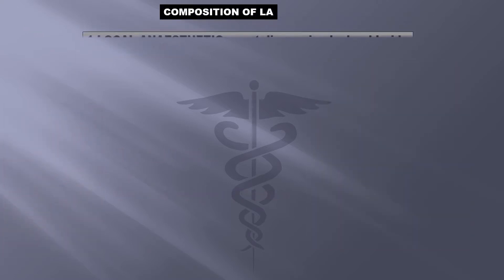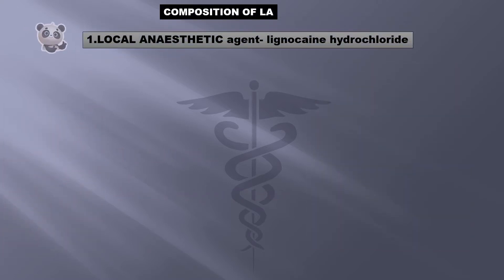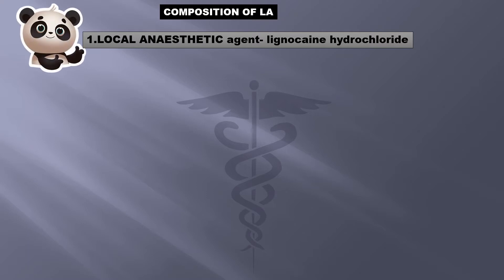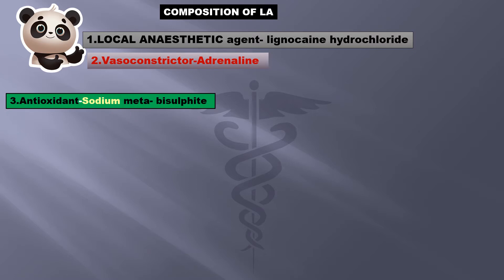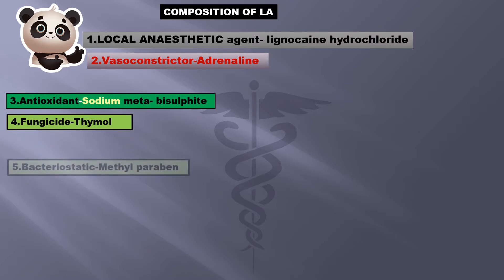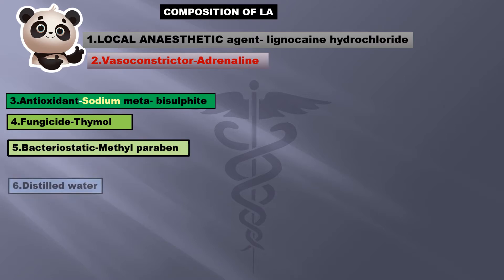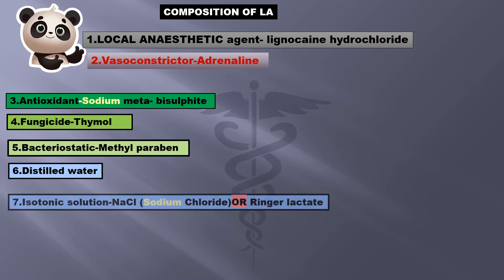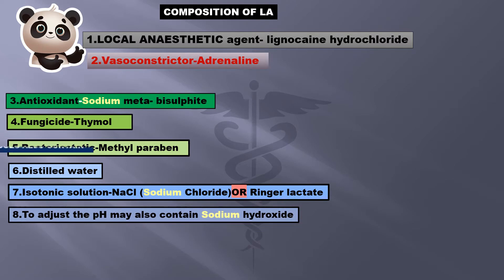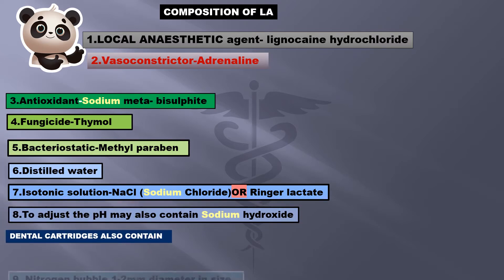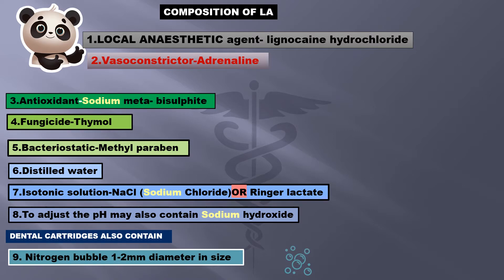First we have the main component, that is the local anesthetic agent lignocaine hydrochloride. 2. Vasoconstrictor — adrenaline. 3. Antioxidant — sodium metabisulfite. Fungicide — thymol. Bacteriostatic — methyl paraben. Distilled water. Isotonic solution of sodium chloride or Ringer's lactate solution. To adjust the pH — sodium hydroxide. Dental cartridges also contain nitrogen bubbles 1–2 mm in diameter.